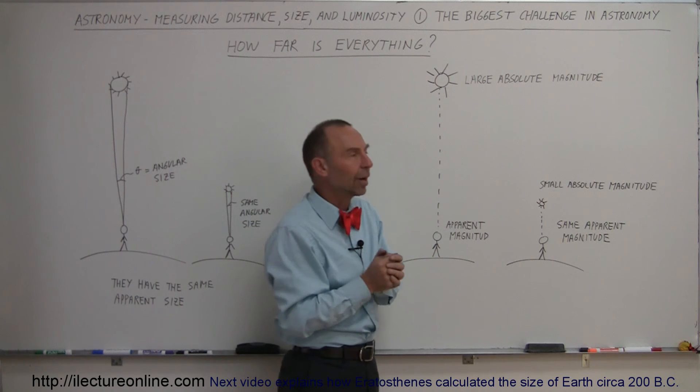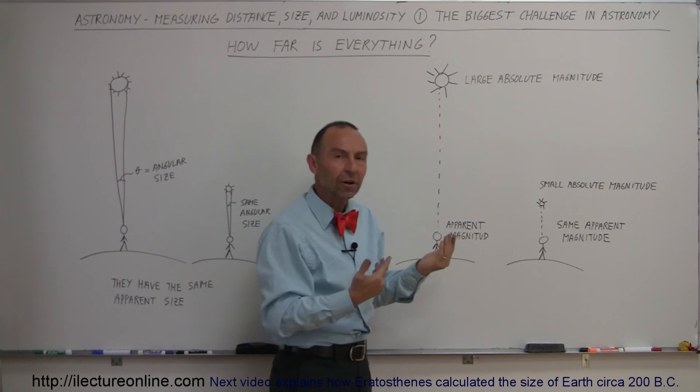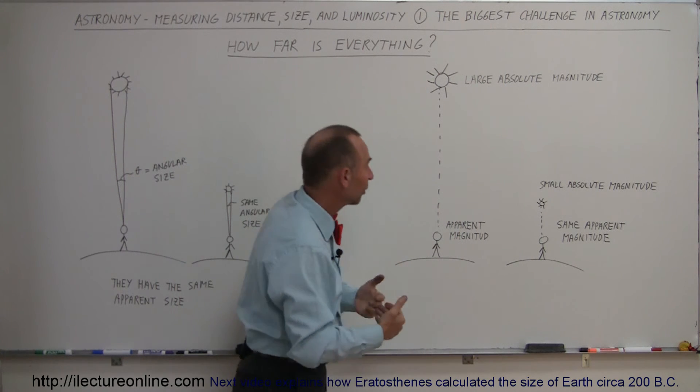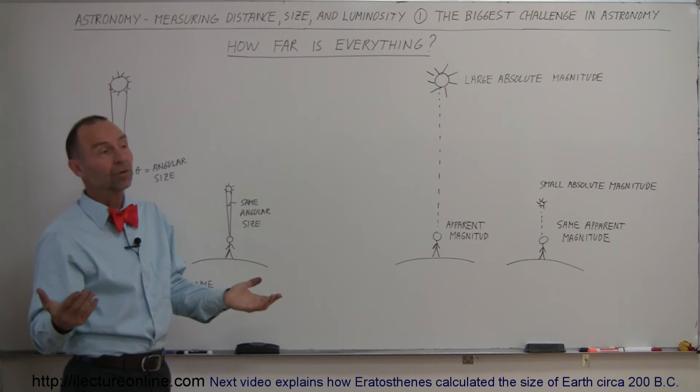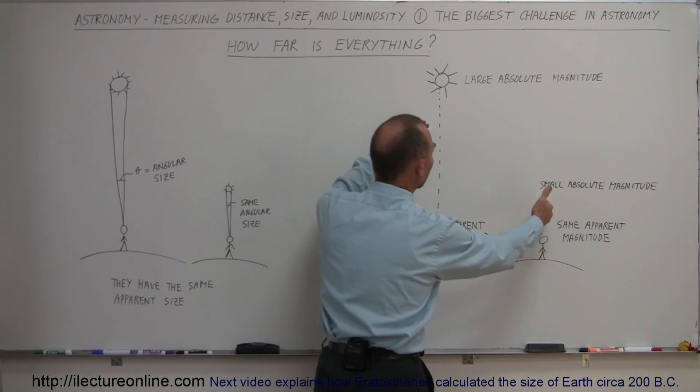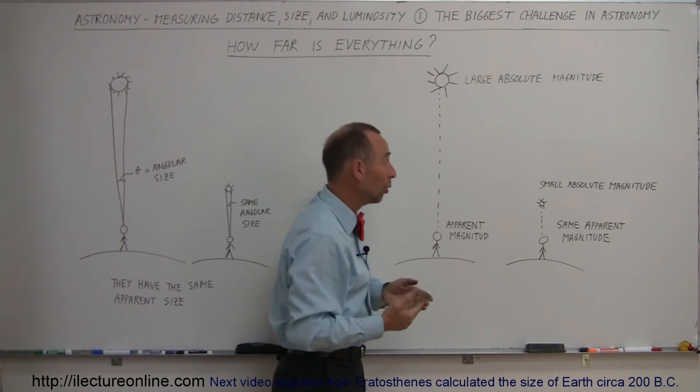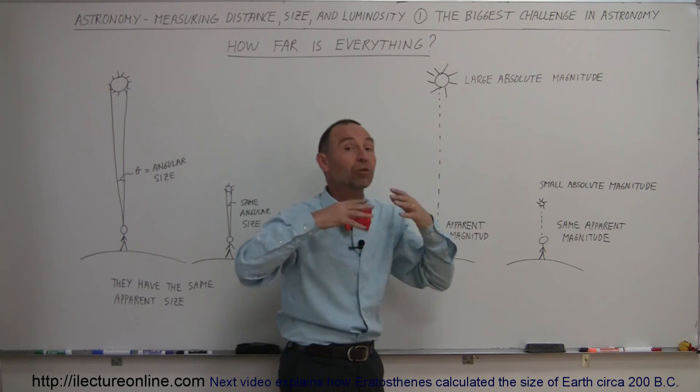But they don't have the same brightness. And the question again is, how do we figure out which one is the bright star, and which one is the dimmer star? Which one is the bigger star, which one is the smaller star? And it really comes down to it, is if we can just know how far the stars were. If we knew how far they were, then it would be really easy to figure out, oh, they look the same brightness, but this one is much farther away, so therefore it must be a lot brighter.